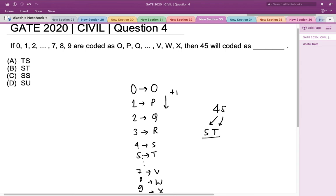So ST would be the code for 45, which matches with option B. So option B, ST, is the right answer. Thank you.